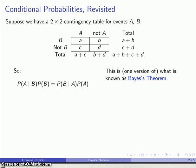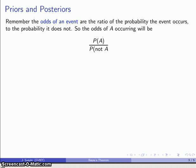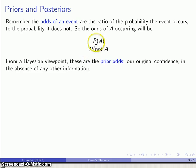Bayes' Theorem is particularly useful when we think about the odds of an event occurring or not. The odds of an event are the ratio of the probability that an event occurs to the probability that it does not. So the odds that A occurs is the probability of A over the probability of not A. From a Bayesian viewpoint, these are the odds based on a complete lack of any other information — we call these the prior odds.